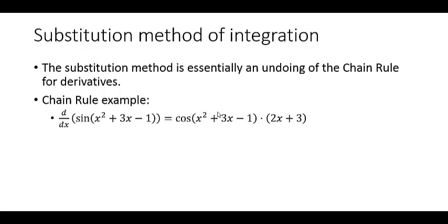Derivative of x squared is 2x, derivative of 3x is 3, derivative of negative 1 is 0. So you get a derivative of 2x plus 3. So this is the chain rule for derivatives.